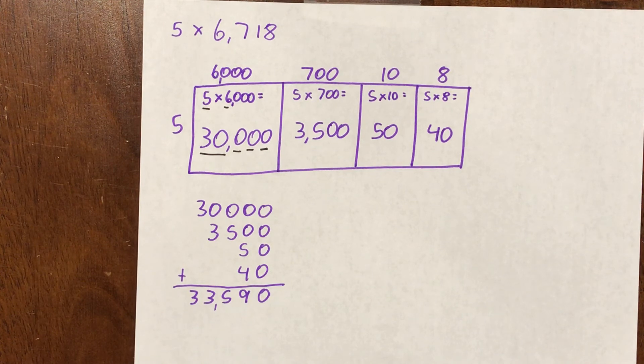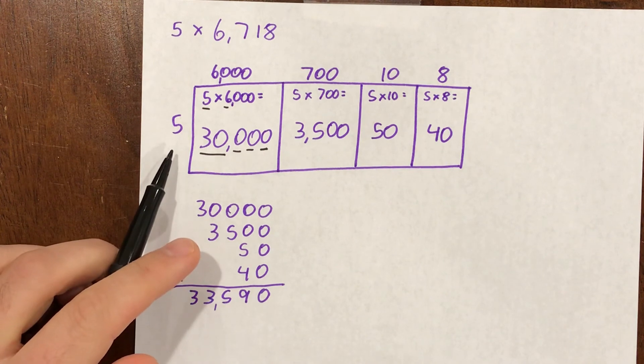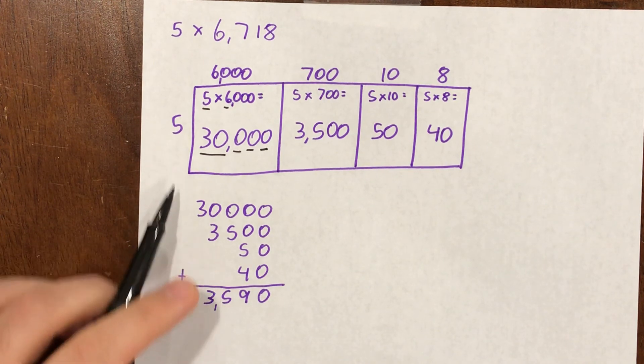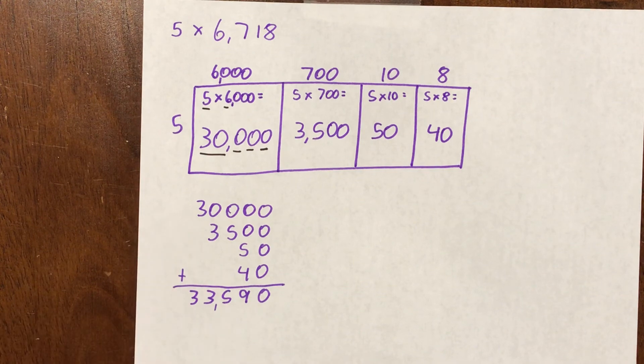Right, the factor that I used for the width of this rectangle, 5, it's only got one place value, so I don't need another row underneath for another place value.